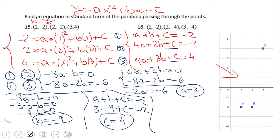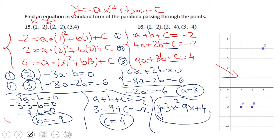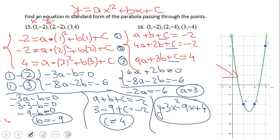Finally, the equation is y equals 3x² minus 9x plus 4. This is the quadratic equation that goes through those three given points. You can put it in a graphing calculator or any computer system and verify it. Go ahead and try number 16 as well.